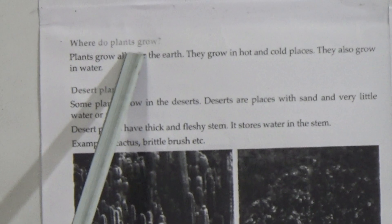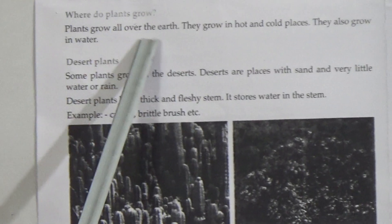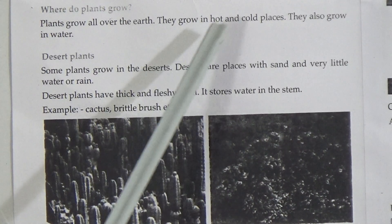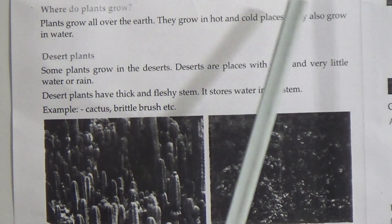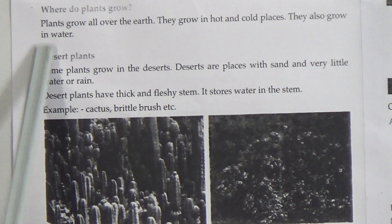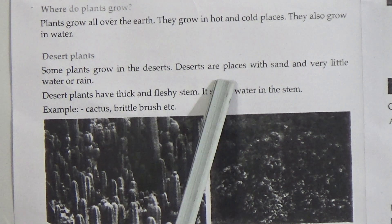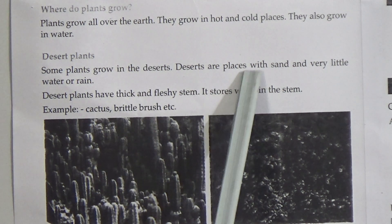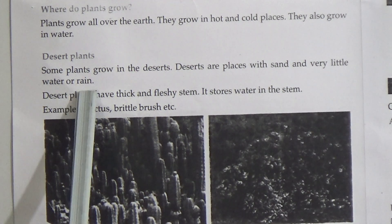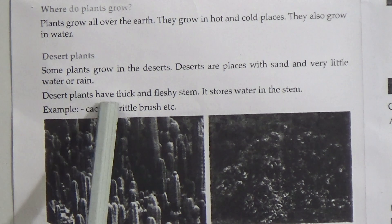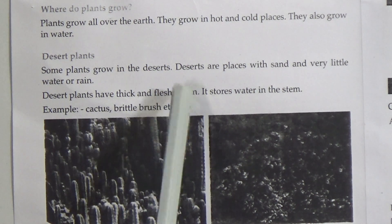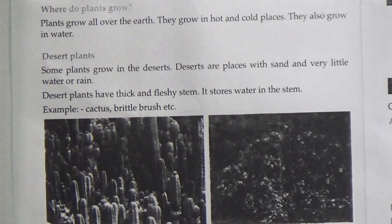Now students, come to page eleven — where do plants grow? Plants grow all over the earth. They grow in hot and cold places and also in water. Desert plants: some plants grow in the deserts. Deserts are places with sand and very little water or rain. Desert plants have thick and fleshy stems that store water. For example: cactus, brittle brush, etc.